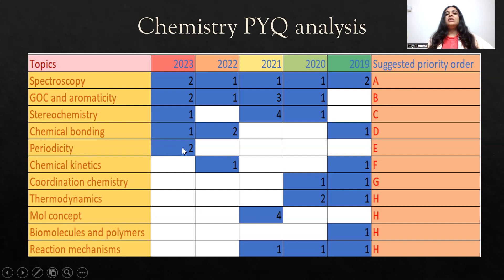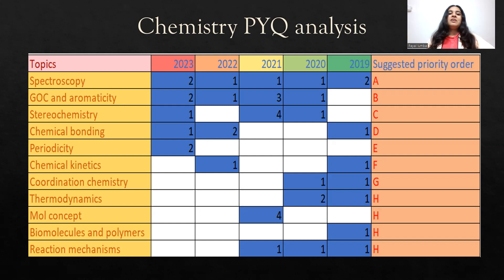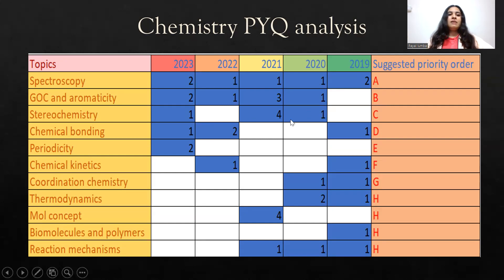In periodicity they ask which element is more metallic, atomic radii, size, and similar questions. In chemical bonding, in 2023 they asked a very simple question like which type of bond is present in a compound — for example NaCl has an ionic bond — and a match-the-column type question was given for a complex compound. Practice stereochemistry well, as a question from stereochemistry can be expected.